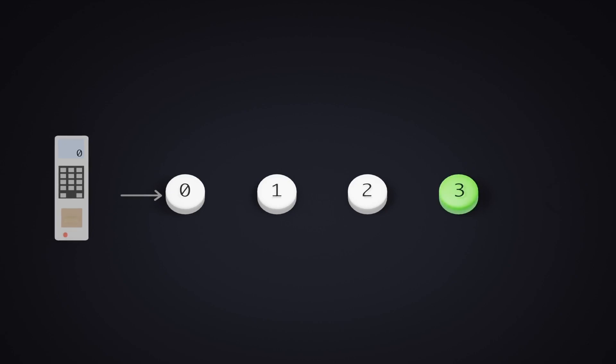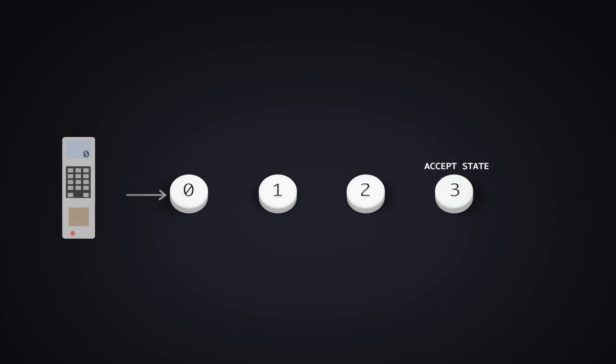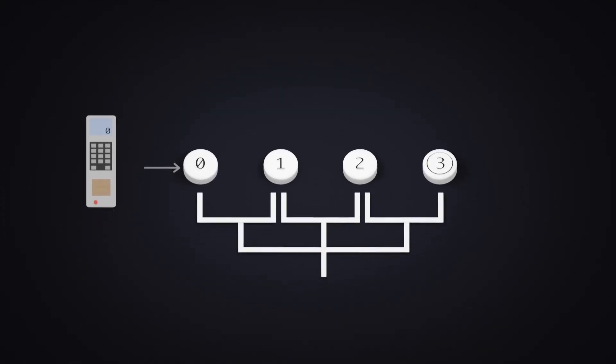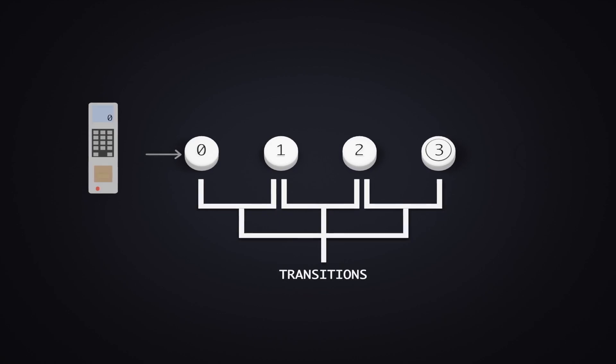For the $3 state, it is a very special state known as the accept state. This is the state where enough money has been inserted into the machine. To represent the accept state, we draw a smaller circle within the larger one. Now that we have all the states, let us think about the transitions between the states.